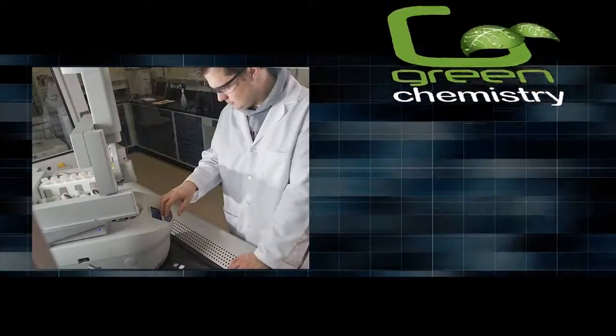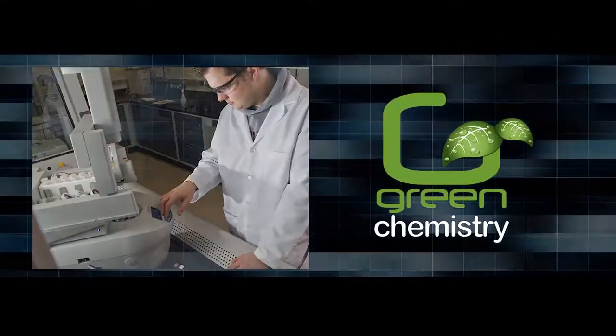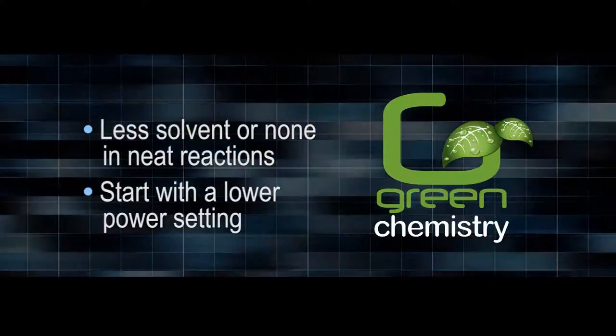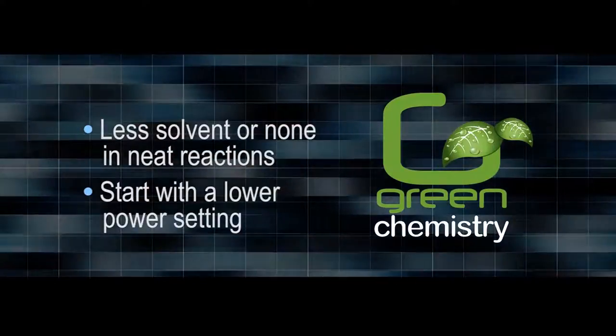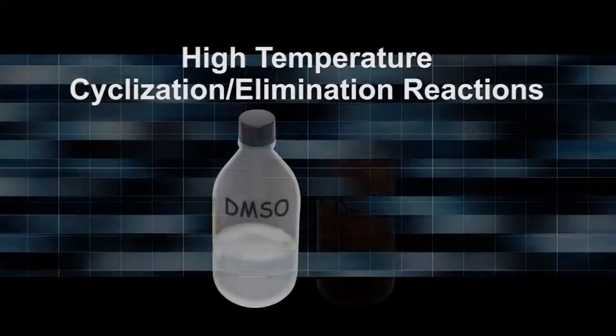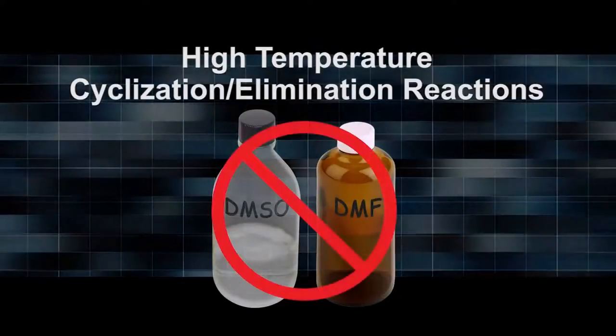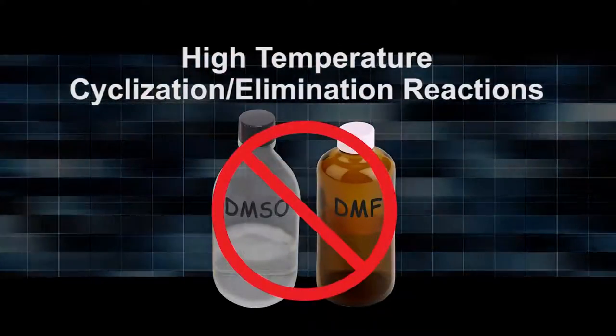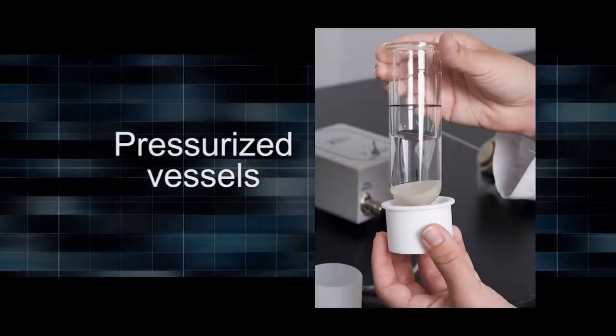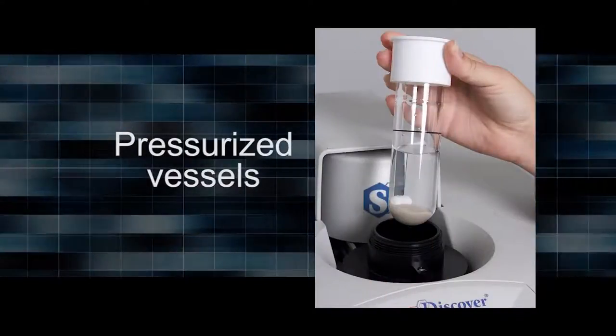You can also try greener chemistry using less solvent or no solvent in neat reactions, but be sure to start with a lower power setting to avoid temperature spikes. And for those high temperature cyclization or elimination reactions, high boiling solvents such as DMSO or DMF are not needed. Microwave chemistry is designed for using pressurized vessels which permits the use of low boiling solvents to reach high reaction temperatures, simplifying the workup and isolation process.